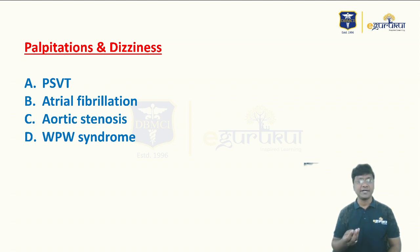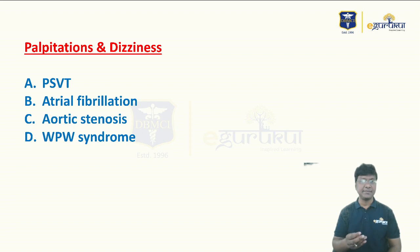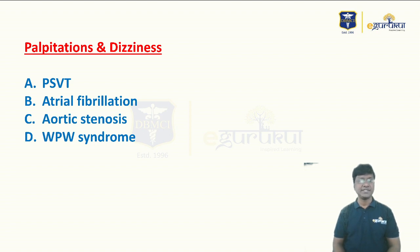PSVT — paroxysmal supraventricular tachycardia — can present with palpitations and dizziness. Atrial fibrillation patients can also have palpitations. Aortic stenosis, secondary to hypotension or ventricular hypertrophy, can cause arrhythmias and palpitations. WPW syndrome, which is Wolf-Parkinson-White syndrome — a pre-excitation syndrome — also presents with palpitations and dizziness.